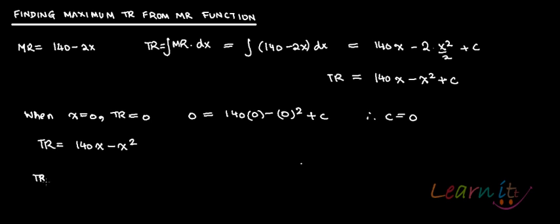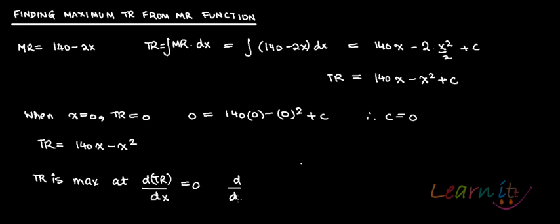To find the maximum total revenue, apply the first-order condition: TR is maximum when dTR/dx equals 0. The derivative of 140x minus x squared is 140 minus 2x. Setting this equal to 0 gives x star equals 70, which is the critical point.